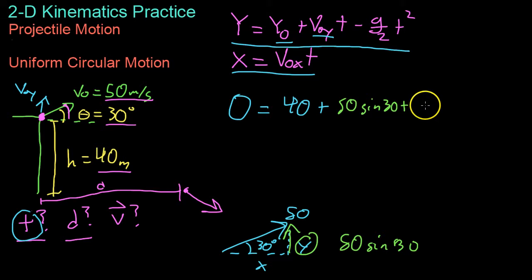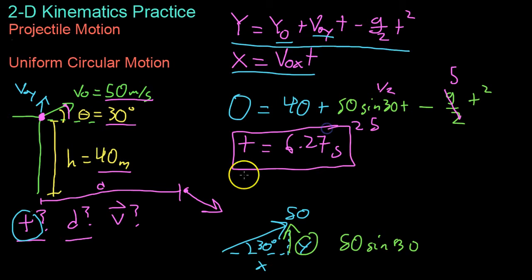And then from here we just take into account the only acceleration that's affecting the particle. In this case gravity in the negative direction. Now solving for this, this 50 sine of 30 because sine of 30 is one half, this whole term becomes 25. And because g will approximate as 10, this whole term becomes 5. Now plugging that into a quadratic formula, you'll get that the time it takes for the projectile to hit the ground is about 6.27 seconds.